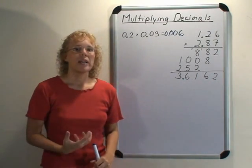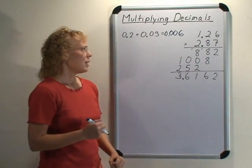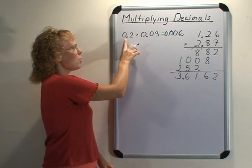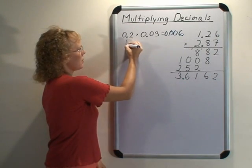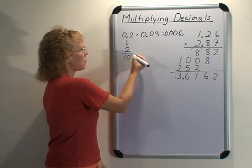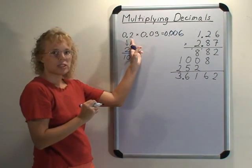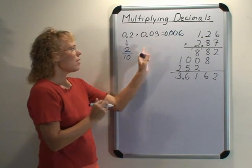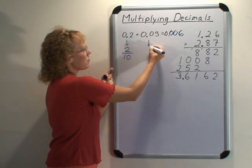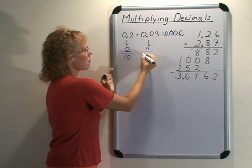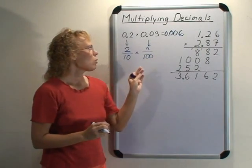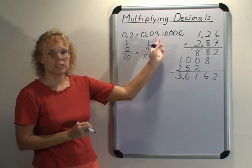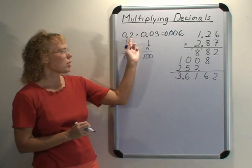Now let's look at where this rule comes from, and it goes back to fractions. I'm going to write these factors as fractions. 0.2 means 2 tenths. That's one decimal digit so it is tenths. And here we have two decimal digits and it is 3 hundredths. You'll notice that you have two zeros here in the hundred and two decimal digits here. One zero here and one decimal digit here.